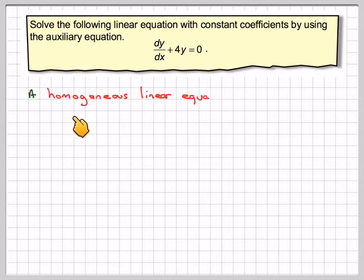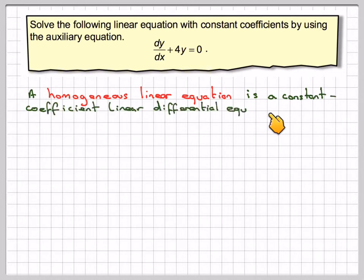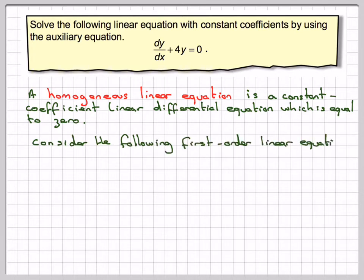Now a homogeneous linear equation, not to be confused with a homogeneous equation which we already met, is a constant coefficient linear differential equation which is equal to 0. Let's consider this first order one, which is dy by dx plus 4y is equal to 0. Now the constant here is 1, the constant here is 4, and it's equal to 0. So it meets this criteria up here.